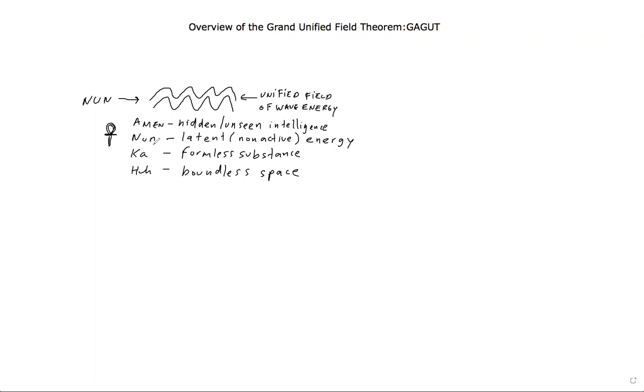So those are the four attributes that pre-existed before the coming into being or Khepera. Ancient Africans referred to Khepera as coming into being, which is symbolized by the scarab beetle. Out of the primordial waters of Nun, there arose a quote-unquote hill. And our ancient ancestors referred to this as Ptah. In scientific terms, Ptah represents the unified force field, unified force field of wave energy.